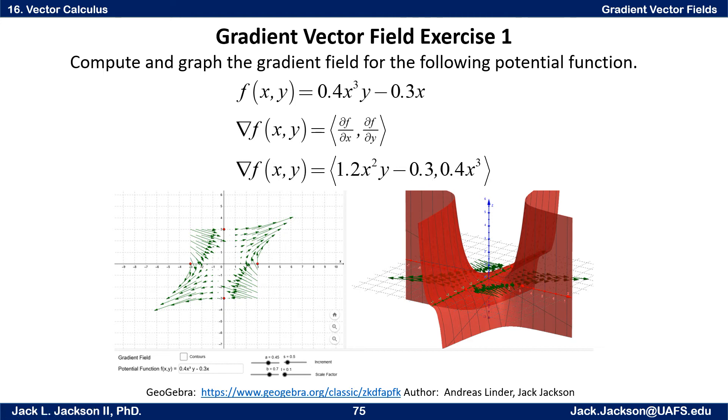Then you've got comma. And what's the derivative with respect to y? Well, the last term there is going to be just 0, so that doesn't affect us. Here we just have a coefficient times y. And so the derivative there with respect to y is that coefficient 0.4x³.